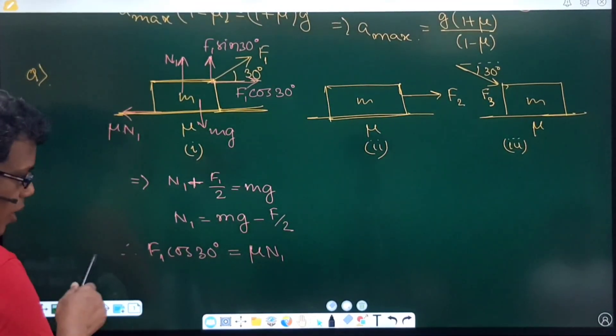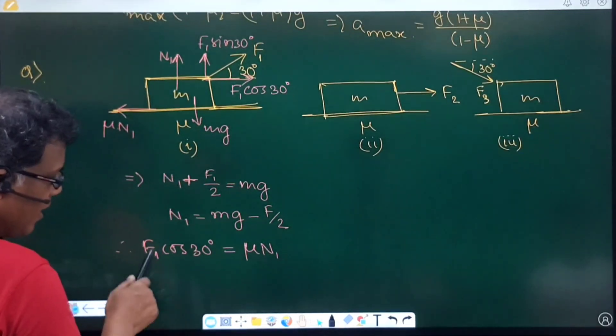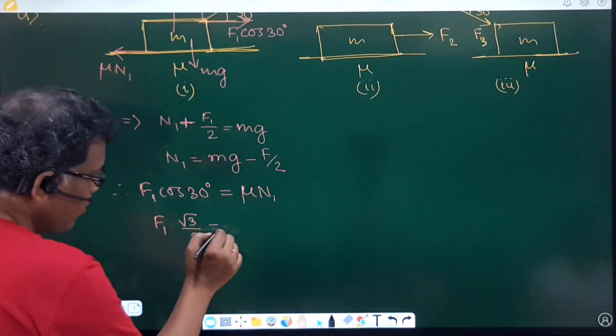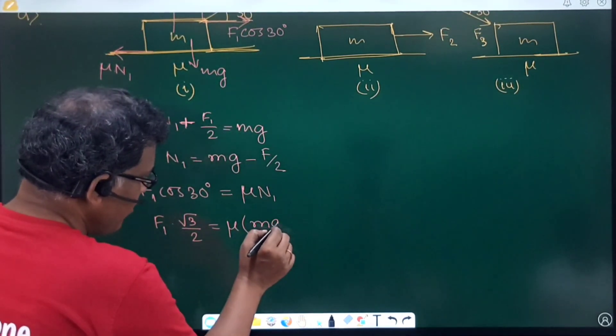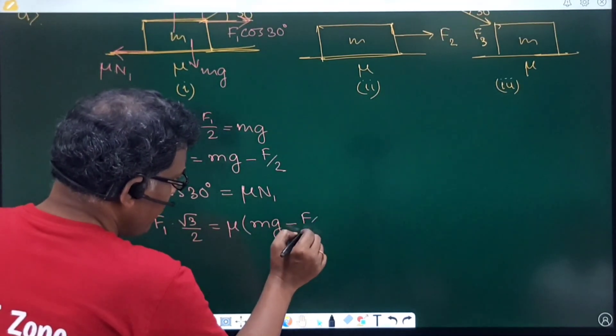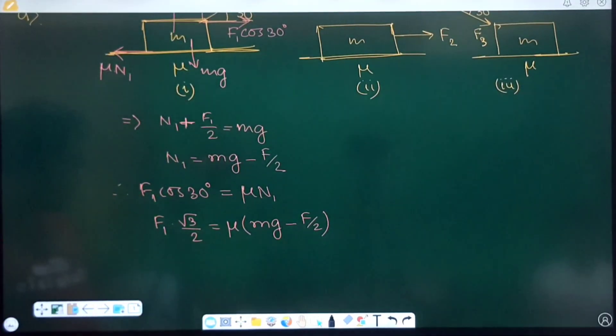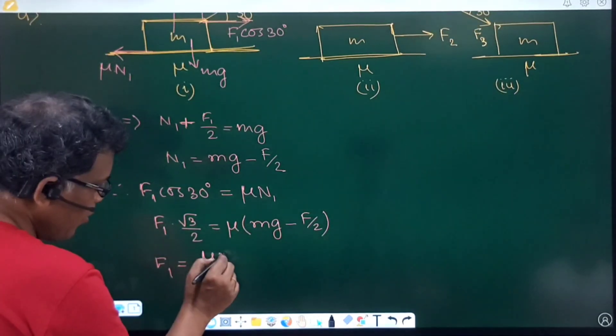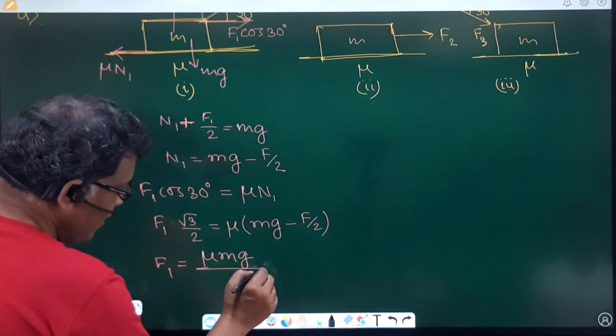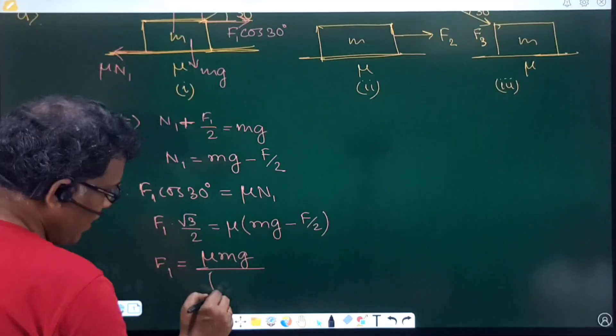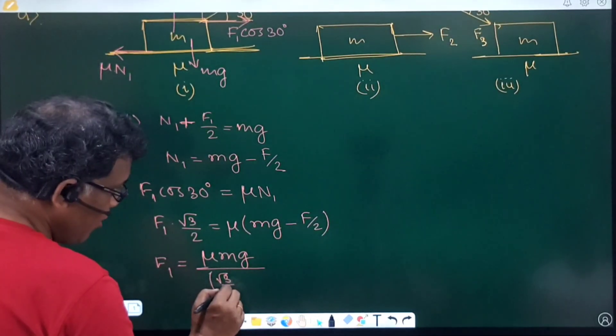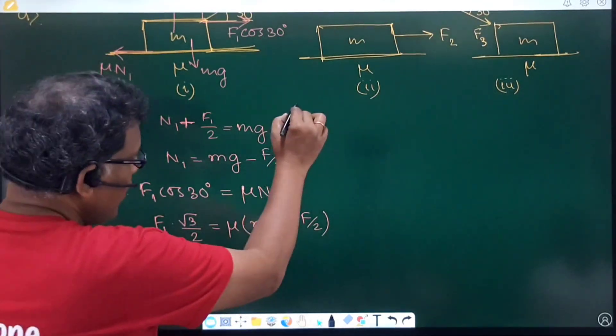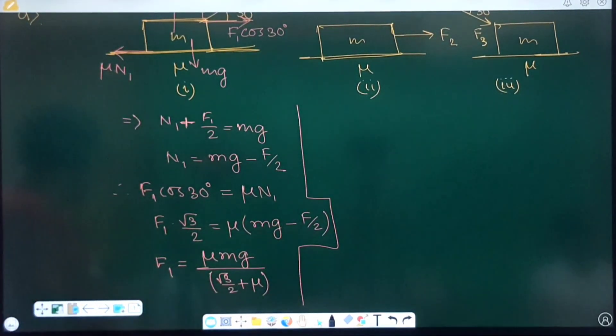So, here I can say numerically F1 cos 30 means root 3 by 2, that will be equal to mu into N1. N1 I can write down Mg minus F by 2. So, then if I collect F1 together, it will be mu Mg divided by the total coefficient of F will be root 3 by 2 plus mu. This is the calculation relating to the case number 1.